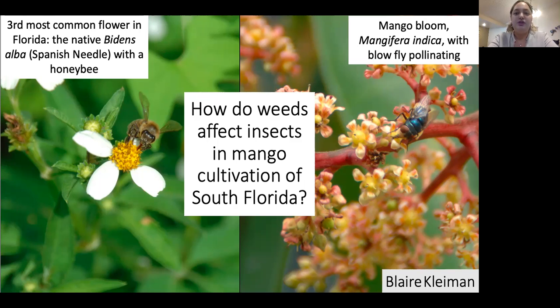For the weed treatment, weed growth is allowed between the trees with the weed species identified. For the no-weed treatment, weeds are excluded around the crop using mechanical removal.